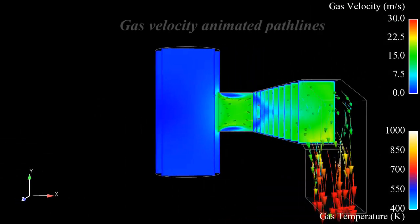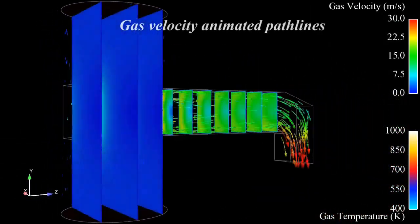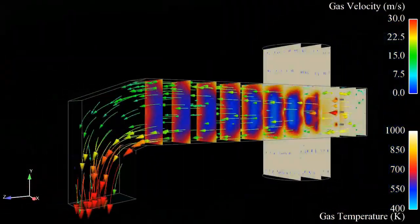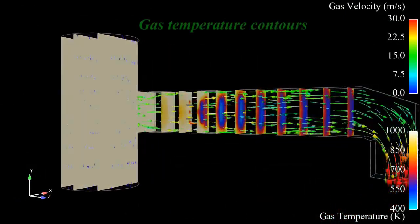The following animations show the gas velocity contours and the animated pathlines of the gas velocity. All these animations are shown for the final solution, with three nozzles located on one wall and two nozzles mounted on the opposite wall.